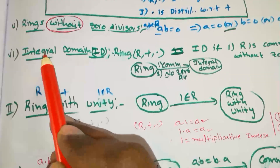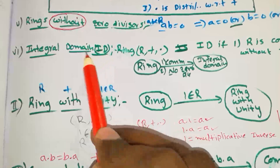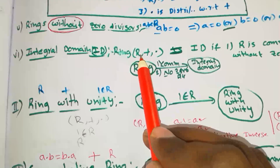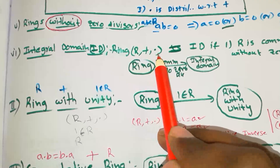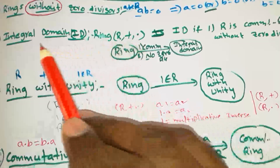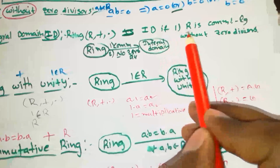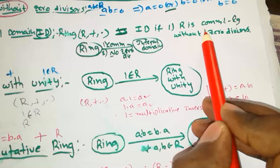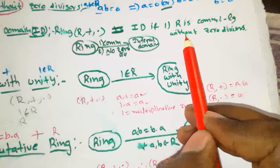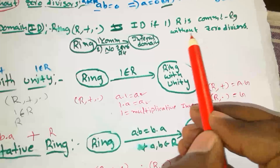What is an integral domain? Let (R, +, ·) be a ring. Then R is said to be an integral domain if R is a commutative ring and it has no zero divisors.